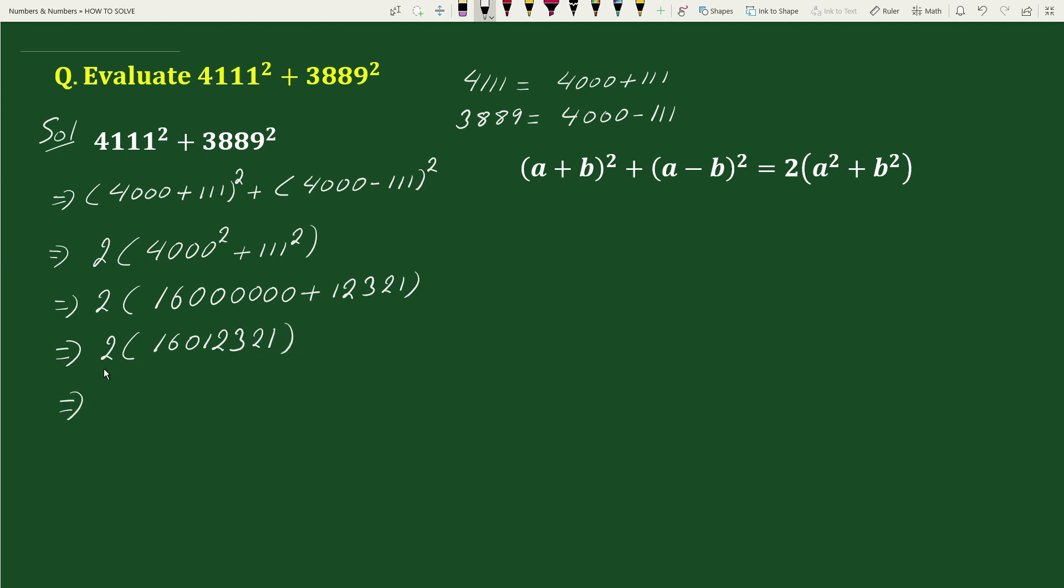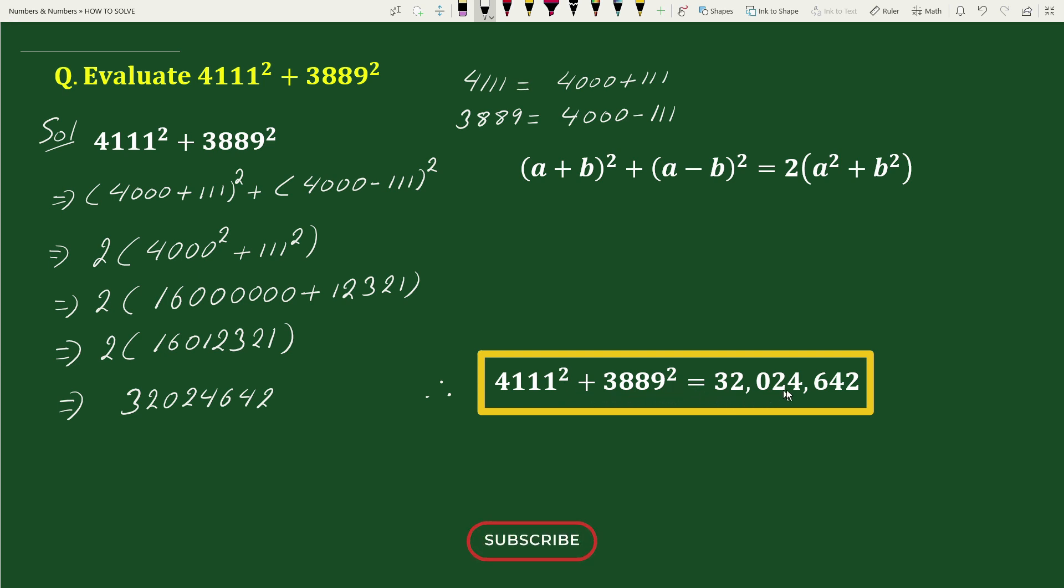This equals to 2 times 16 million 12,321 will be 32 million 24,642. Therefore, 4111 square plus 3889 square equals to 32 million 24,642. This is your solution.